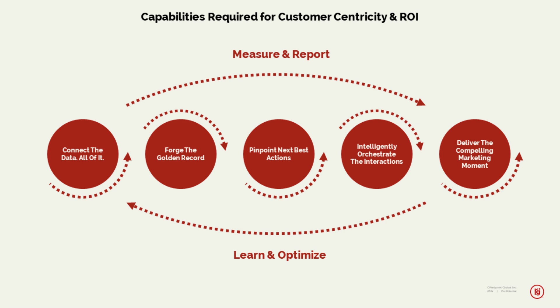There are themes around the clients that are most ambitious and achieving these outcomes. The themes center on five core capabilities: being able to connect all your data, forge a golden record about each individual consumer, pinpoint next best actions, intelligently orchestrate across all channels, and ultimately deliver the compelling marketing moment — while measuring each step and learning from responses to optimize against your business objectives. This closed loop is an important aspect of the capabilities.